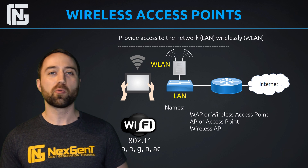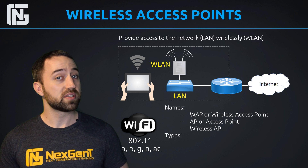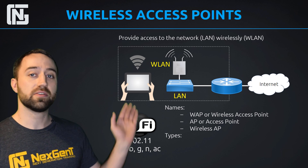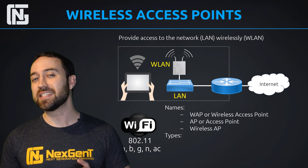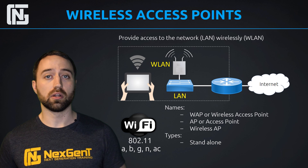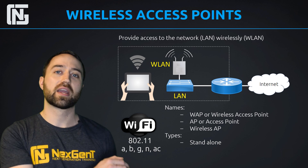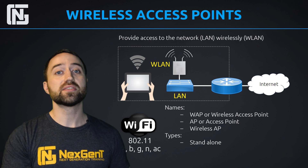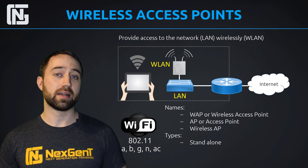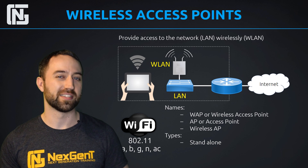I want to wrap this up with some different types of wireless access points that you'll see. The first type is a standalone wireless access point — just like in this diagram. You have your regular local area network, you take your access point, plug it into your network, and that's a standalone wireless access point. Just a single access point to provide wireless access to the LAN, creating a wireless LAN.